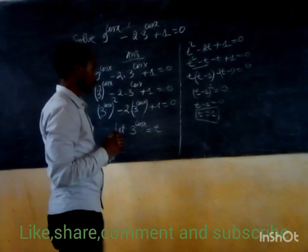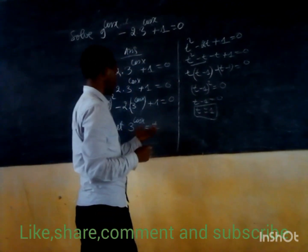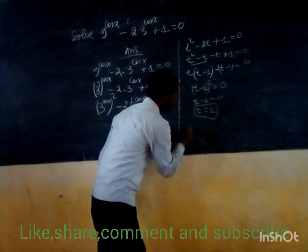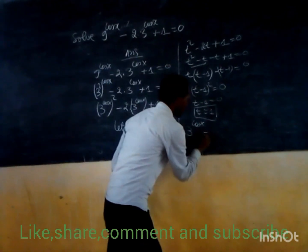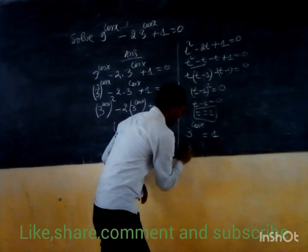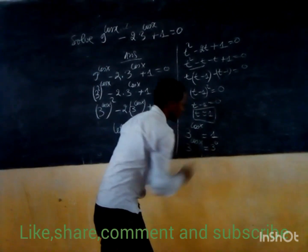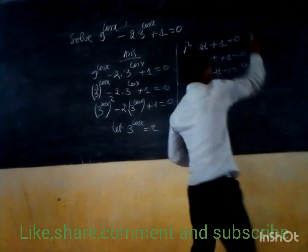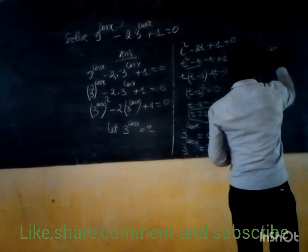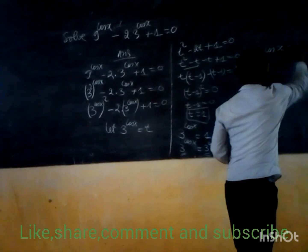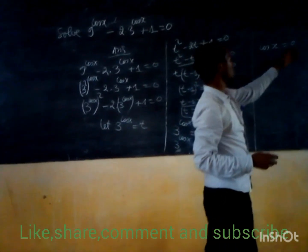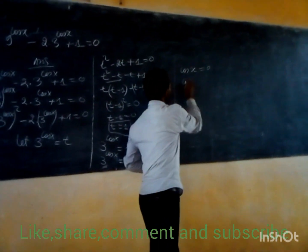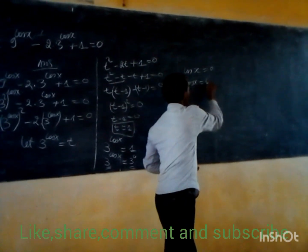Since t equals 1 and t equals 3 to the power cosine of x, we have 3 to the power cosine of x equals 1, which equals 3 to the power 0. Since the bases are the same, cosine of x must equal 0.